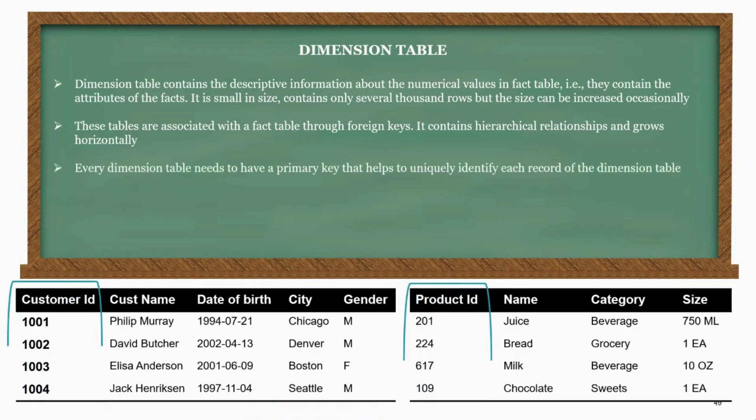Every dimension table needs to have a primary key that helps to uniquely identify each record of the dimension table.